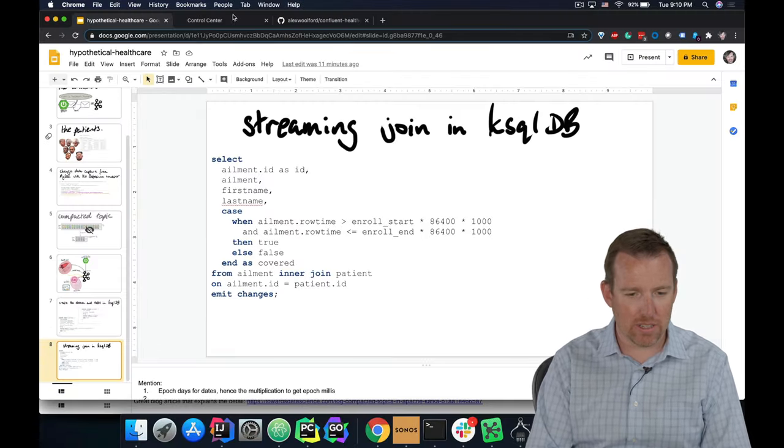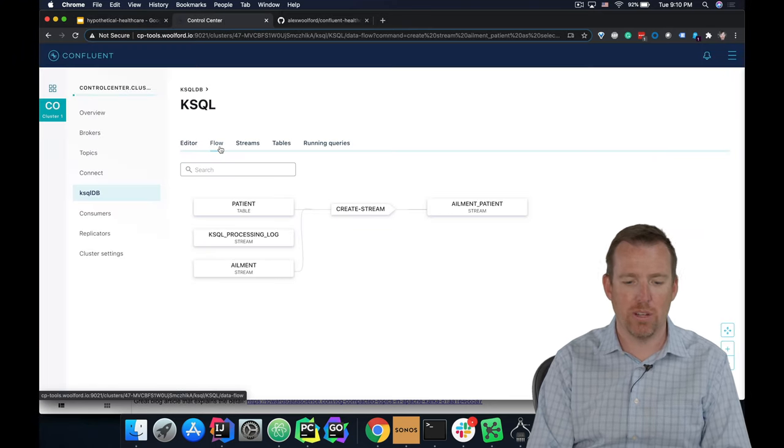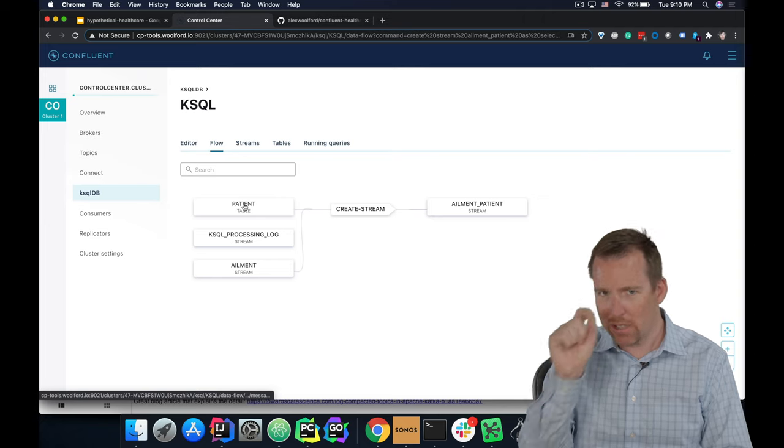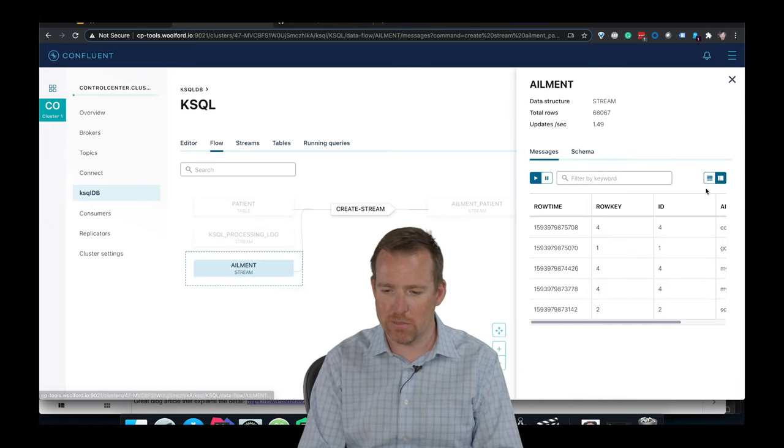So let's have a quick look and see the data flowing. So we have this flow table, and this allows us to browse around. So if I was to click in the ailment stream, for example, I can see these.